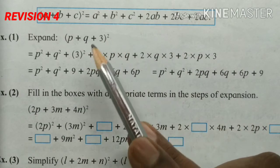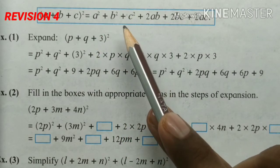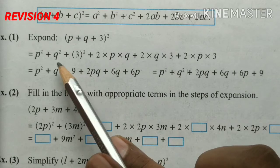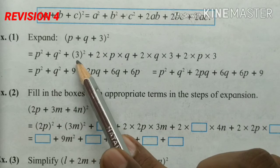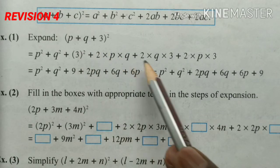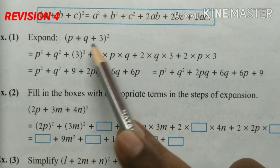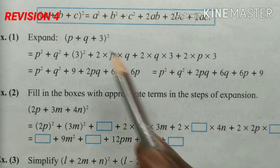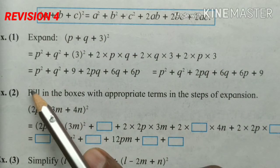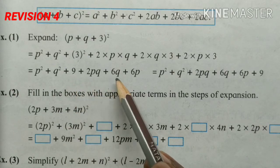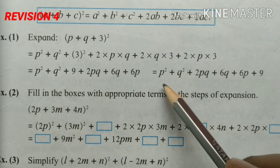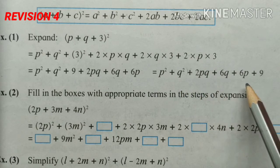Put in the values into this formula — as in the previous method we learned about putting values. We get: first term p square, second term q square, third term 3 square. Then twice p into q, plus twice q into 3, plus twice p into 3. So we get p square plus q square plus 9 plus twice pq plus 6q plus 6p. The answer is p square plus q square plus 2pq plus 6q plus 6p plus 9.